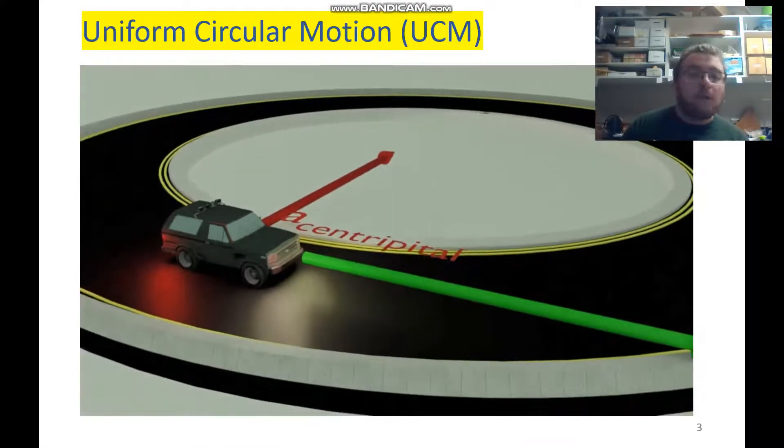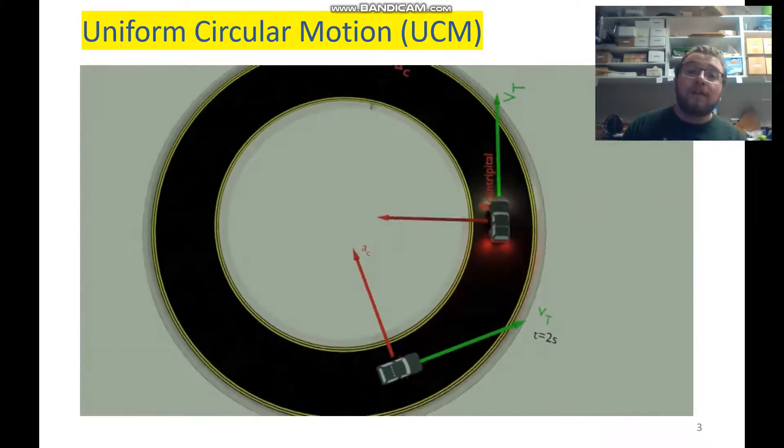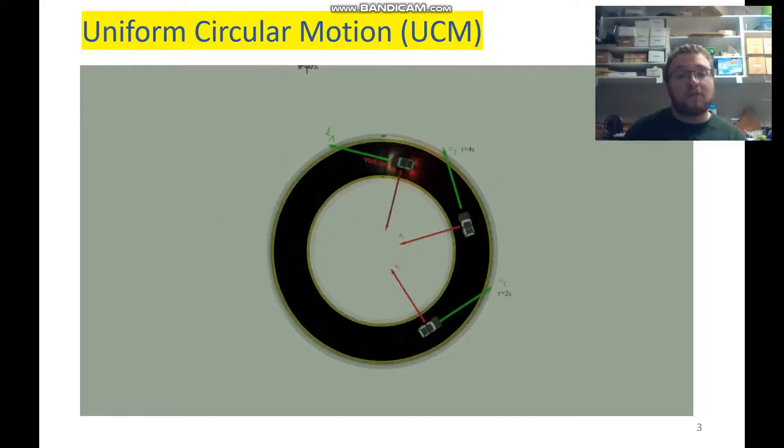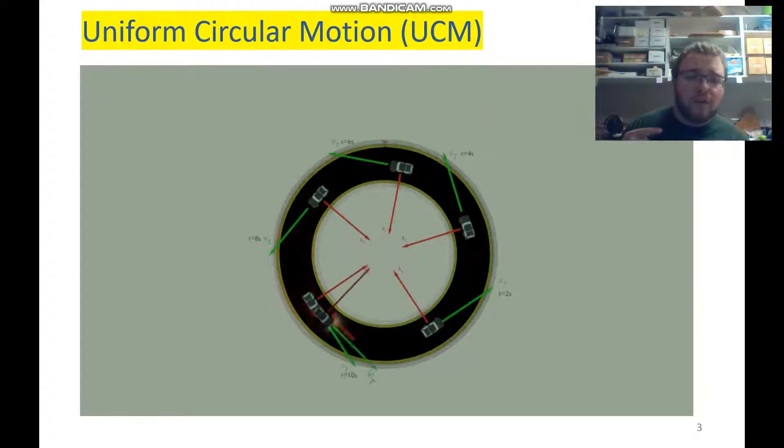Now here we can see the velocity and the acceleration vectors. So when we're in uniform circular motion, our acceleration is called centripetal acceleration, and we can see that it's always pointing into the circle.